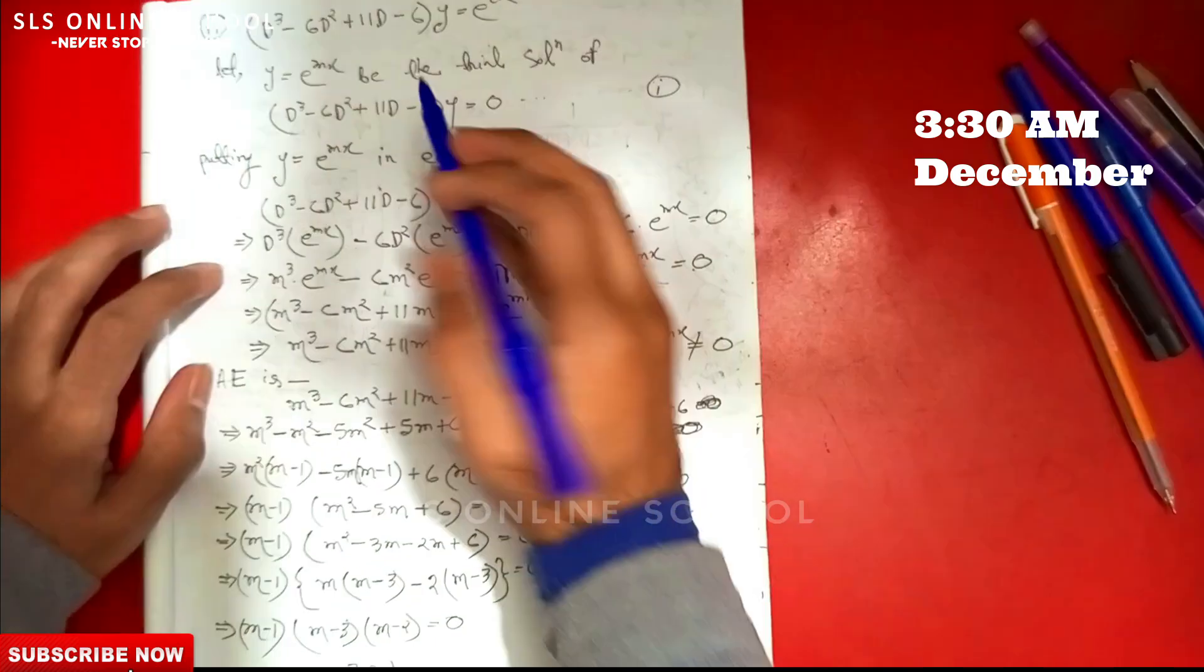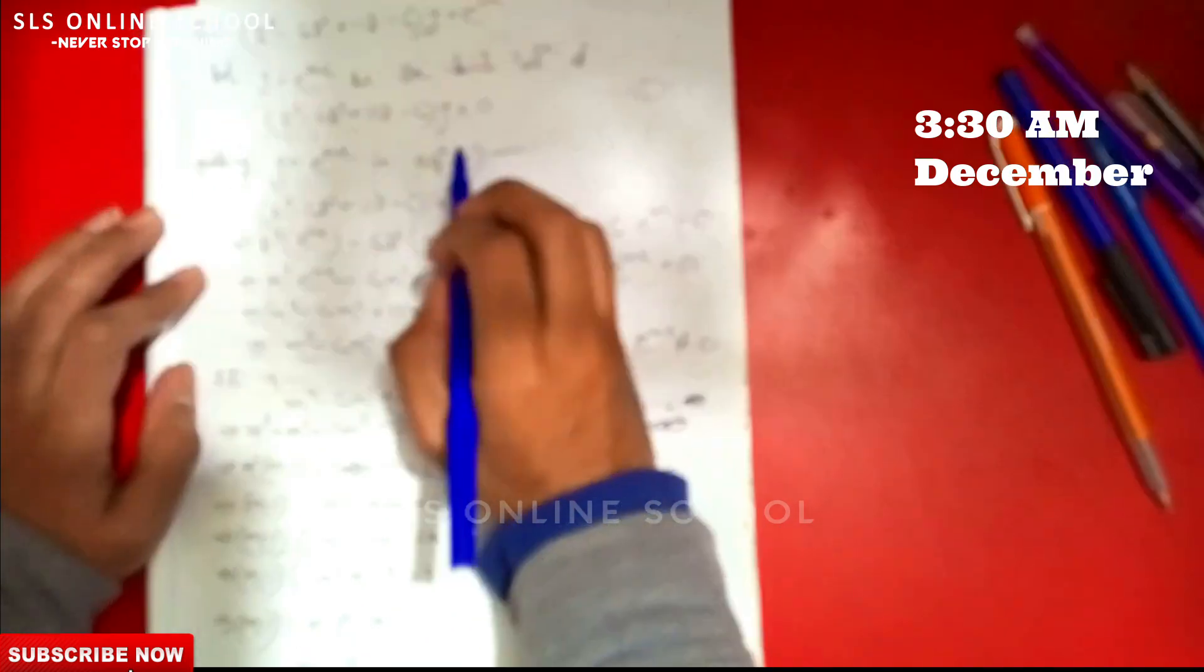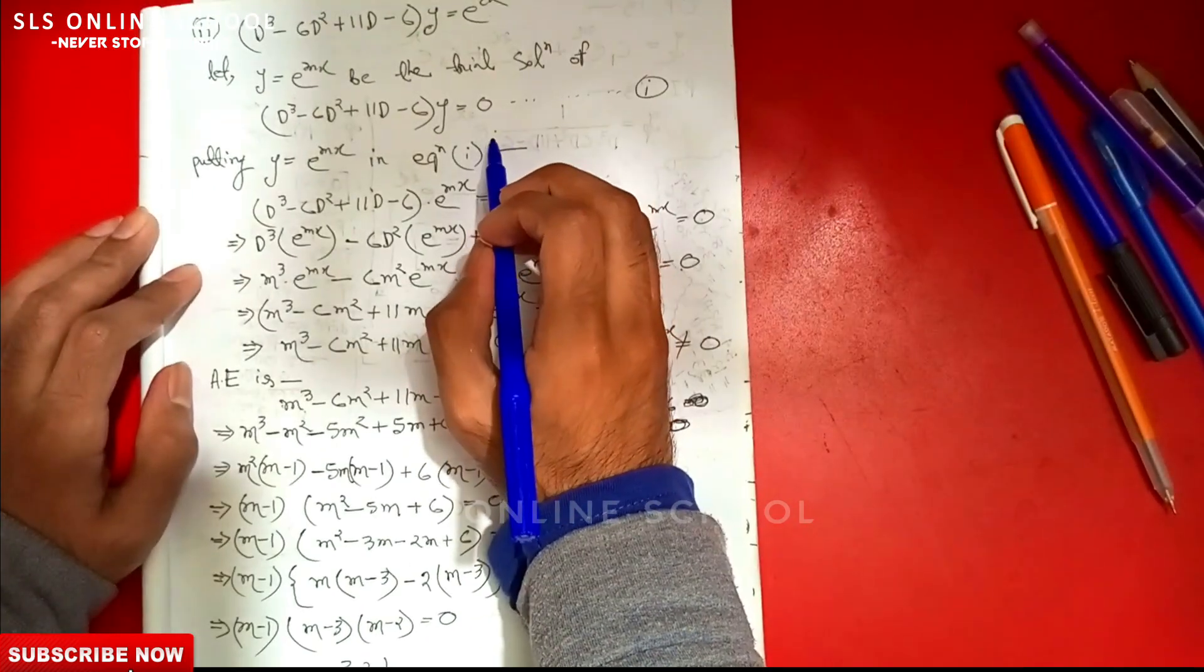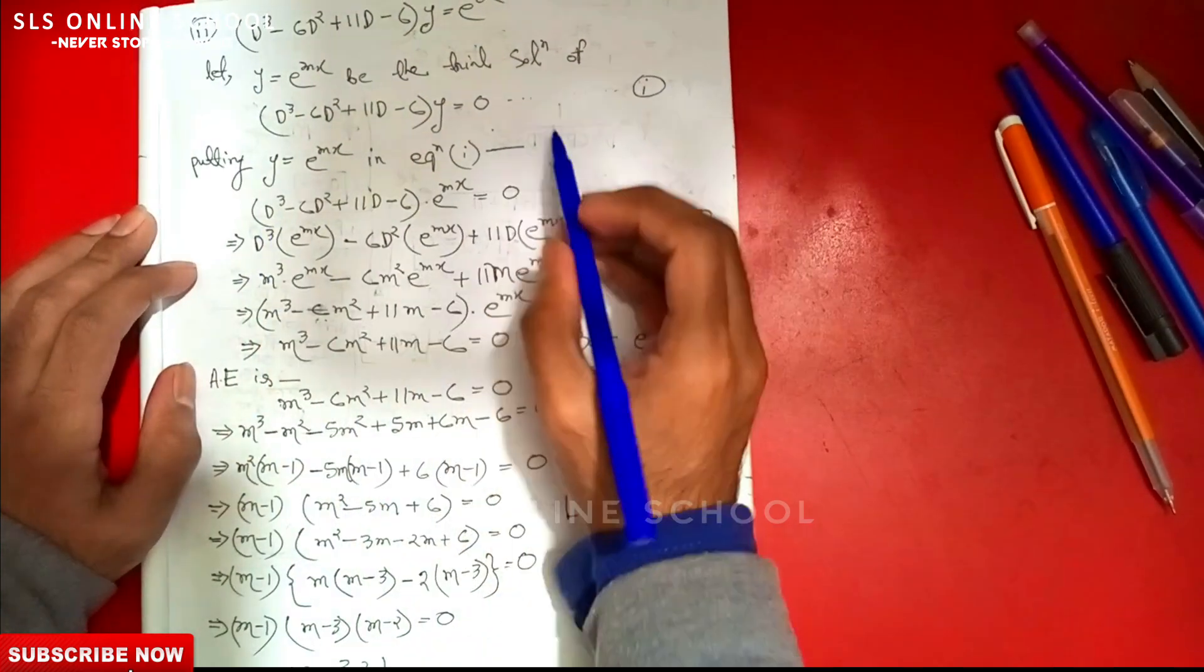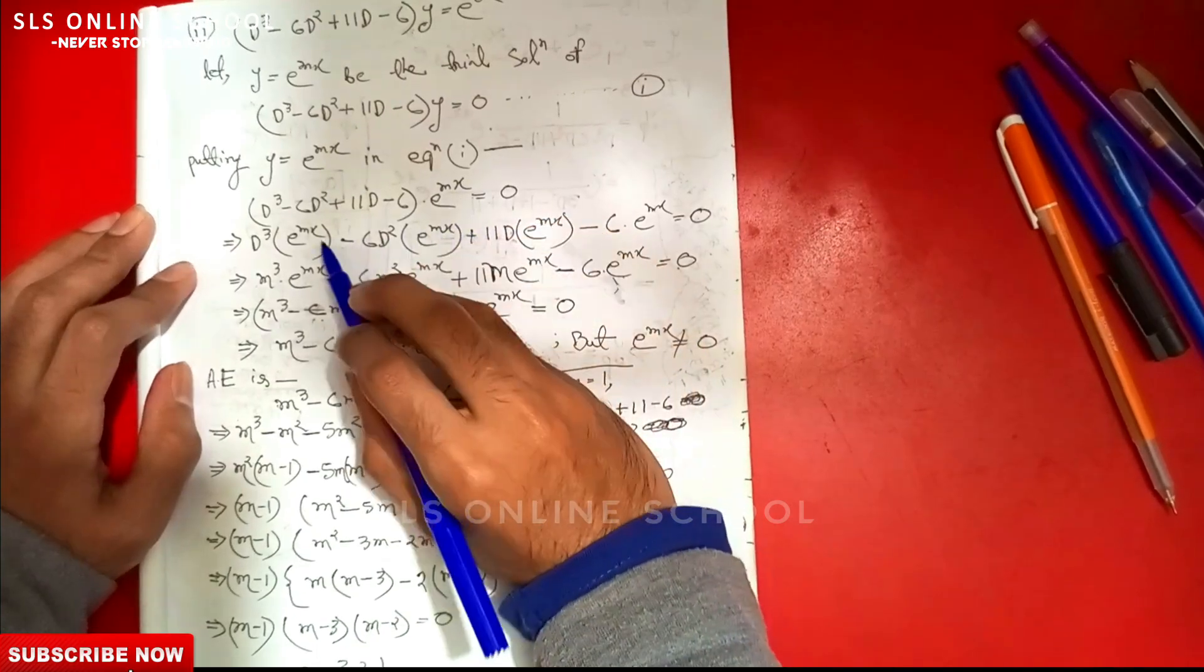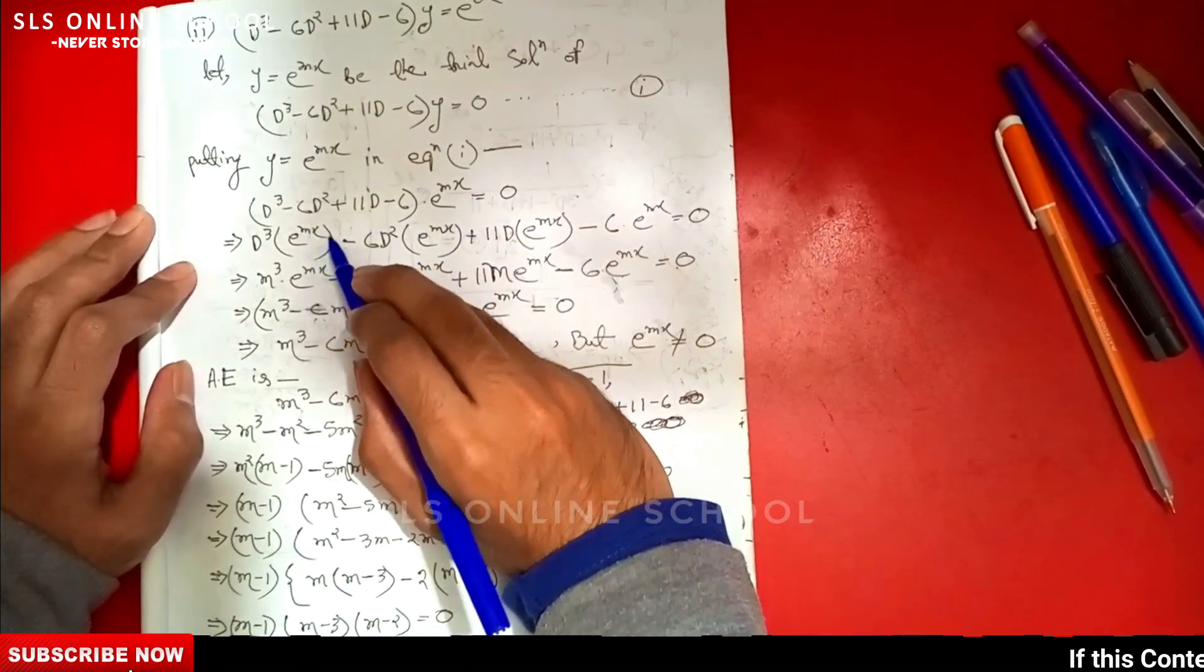Replacing the value in the equation, we develop the problem: d³ into e^(mx) - 6d² of e^(mx) + 11d into e^(mx) - 6e^(mx) = 0.